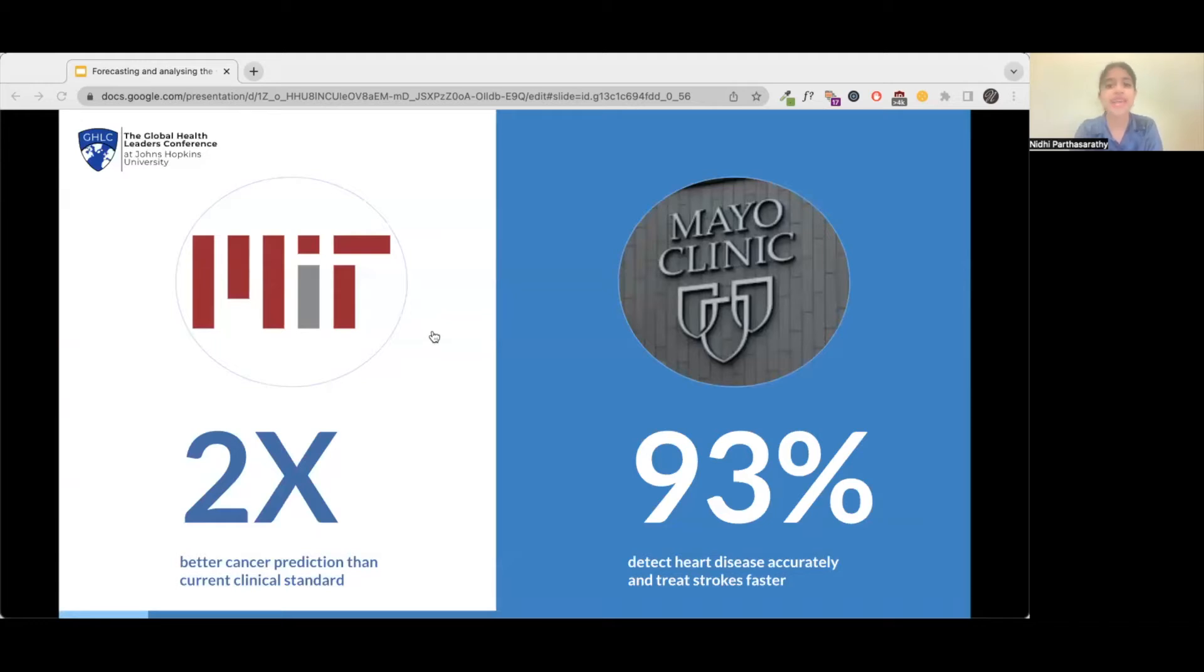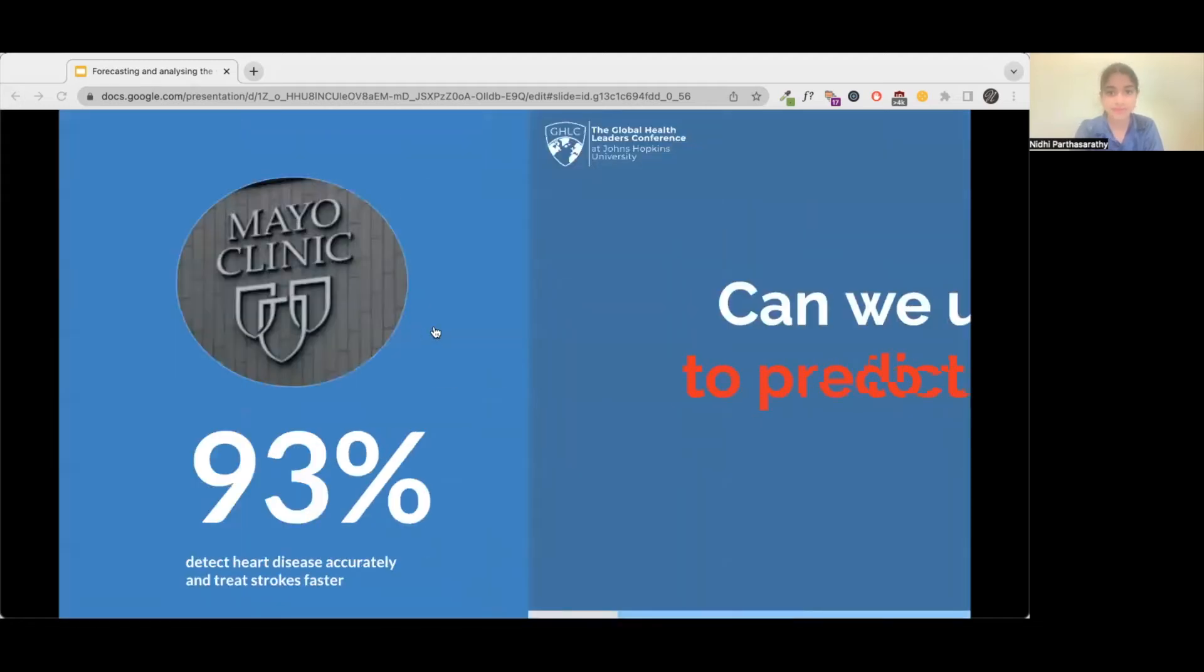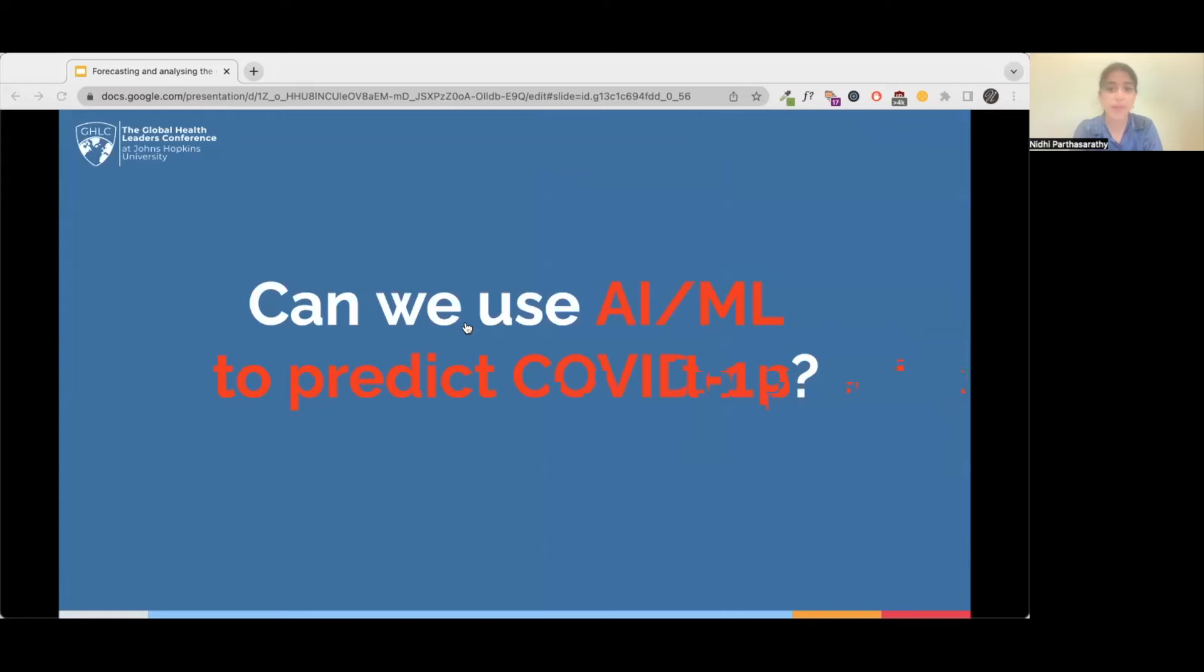MIT recently created Mirai, an AI that predicts the risk of breast cancer based on mammogram results and other risk factors. MIT's model was twice as good at identifying future cancer diagnoses than the current clinical standard and showed similar results across all demographics. Another example, the Mayo Clinic designed an AI that could detect heart disease and treat strokes faster. They applied the AI to screen for left ventricular dysfunction in people without noticeable symptoms. The AI screening tool had 93% accuracy, while the mammogram, the previously accepted way of screening, only had 85%. So can we use these kinds of AI and ML models to predict COVID?